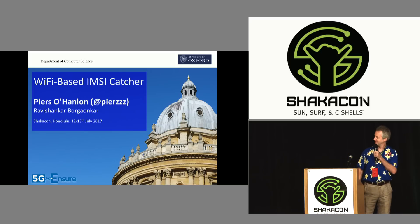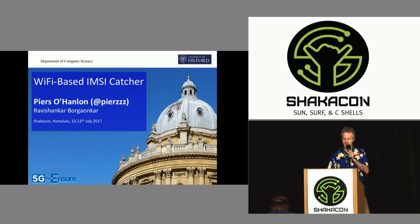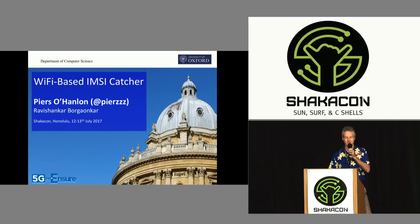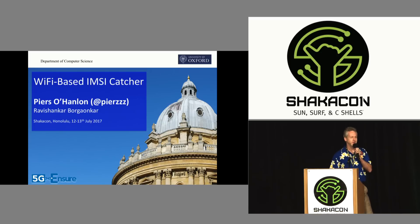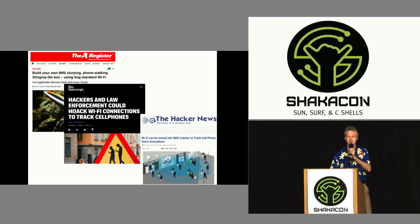Today I'm going to talk about what I've dubbed the Wi-Fi based IMSI Catcher. For those of you who don't know some of the acronyms, I'll be going through them. The IMSI is the International Mobile Subscriber Identifier — the thing inside everyone's SIM card that uniquely identifies you and your subscription to a mobile carrier. I've come up with some ways to track this on Wi-Fi, believe it or not. I've given this talk before — my co-worker Ravi couldn't be here today, but he came along when we first gave the talk at Black Hat. We got a bit of press coverage: Register, Intercept, Hacker News and about 20 others, so you may have read about it.